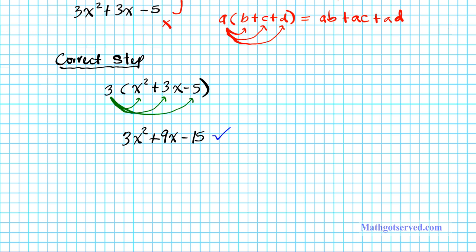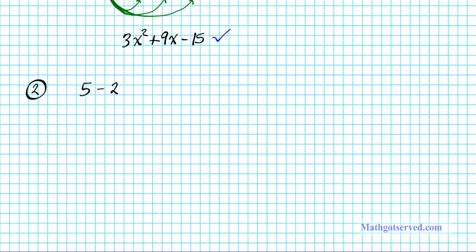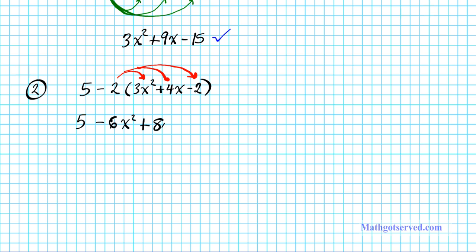Let's take a look at another common mistake. I'm going to make the mistake first and see if you can catch it. So we have the expression 5 minus 2 times the quantity 3x squared plus 4x minus 2. Applying arrows as a visual — one, two, three — I have 5 minus 2 times 3 is 6x squared, plus 2 times 4 is 8x, minus 2 times 2 is 4. Do you see the mistake there?